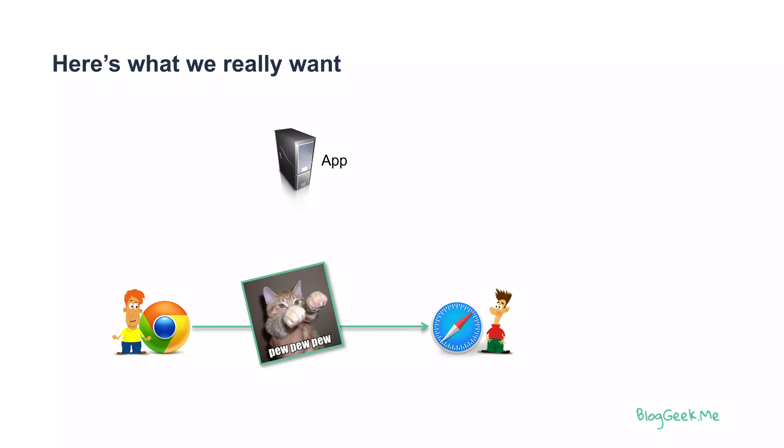WebRTC needs to deal with NATs — network address translators — and firewalls. It needs that because it needs to pass firewalls when you're doing things peer-to-peer, directly from one browser to another, but also when you need to deal with media servers, because our traffic runs over UDP.